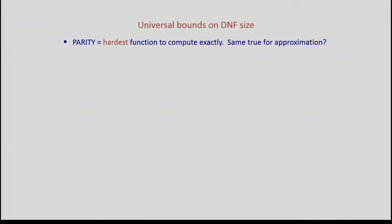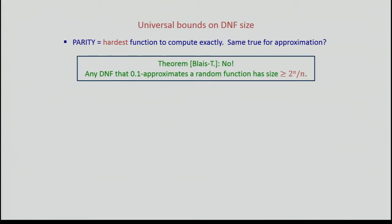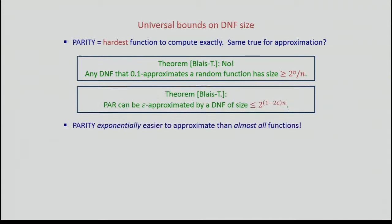Moving on to more global questions about universal bounds. We saw that parity is the hardest function to compute exactly. Is it also the hardest function to approximate by DNFs? Our next result says no. Any DNF that 0.1-approximates a random function has size at least 2^N / N. Recall that parity can be epsilon-approximated by a DNF of size at most 2^((1 - 2ε)N) — for constant epsilon, that's exponential savings. So parity, despite being the hardest function to compute exactly, is in fact exponentially easier to approximate than almost every other function.